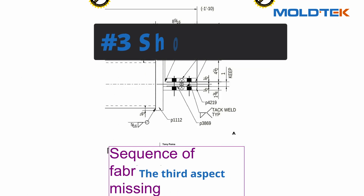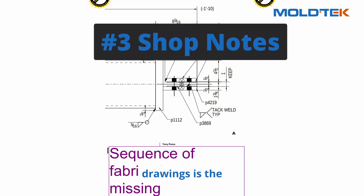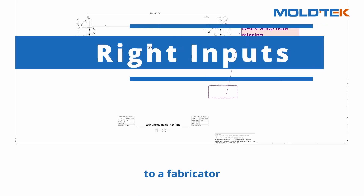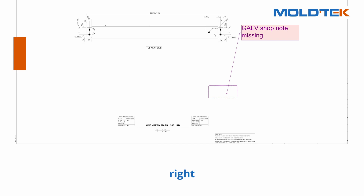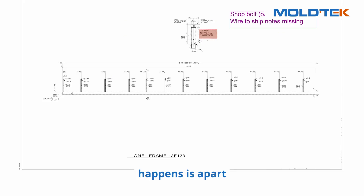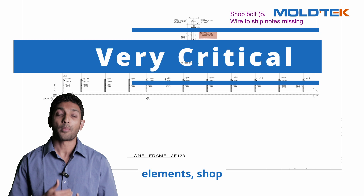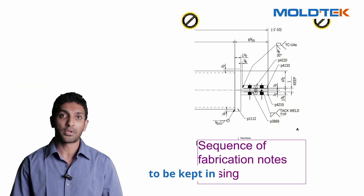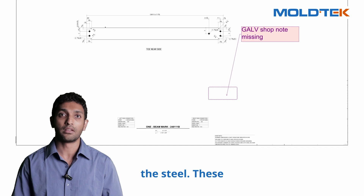The third aspect of the detailing drawings is sharp notes. Sharp notes are very critical in giving the right inputs to a fabricator to ensure the right specifications or any other critical elements of information are kept in mind while fabrication. Apart from the dimensions and the missing elements, sharp notes are very critical because these are those extra points which need to be kept in mind while fabrication of the steel.